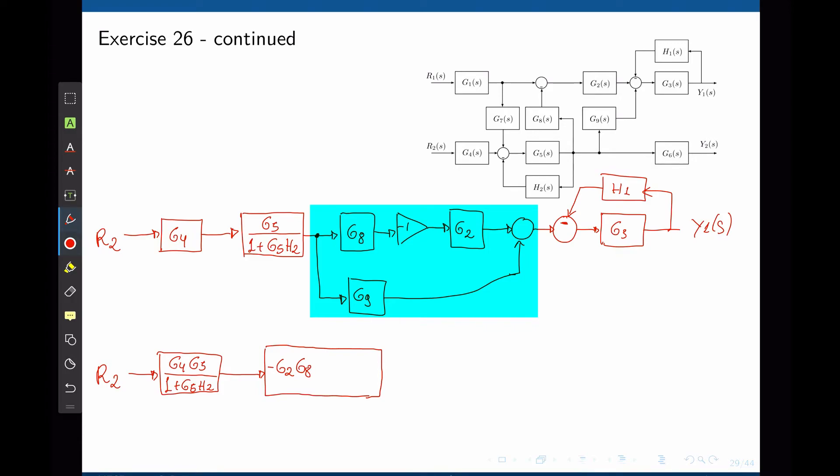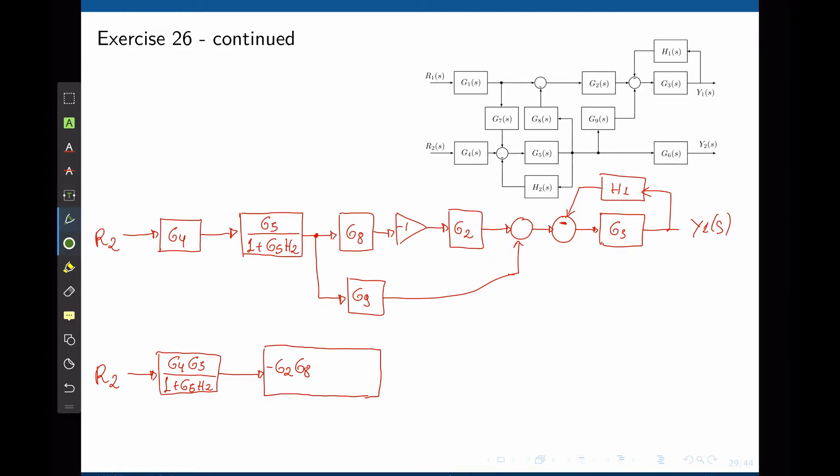And we have that sum underneath. Notice that that is not a feedback loop. That's a feed-forward loop. If we call the signal here A, here we have A times G8 times G2 times negative 1. And underneath here, from the bottom loop, we have A times G9, and then we add them together.